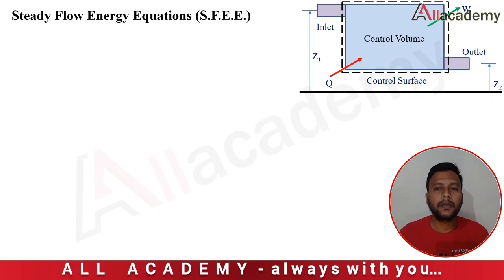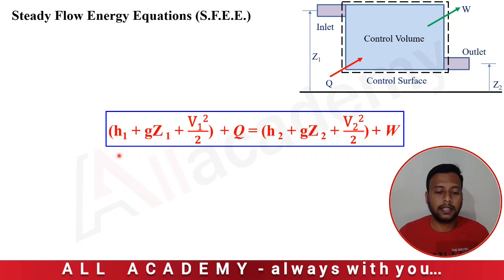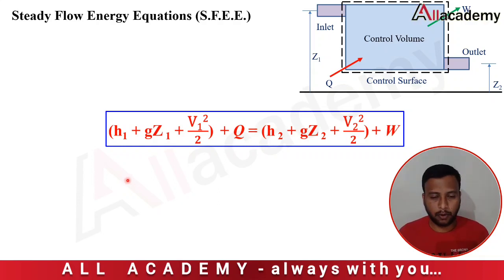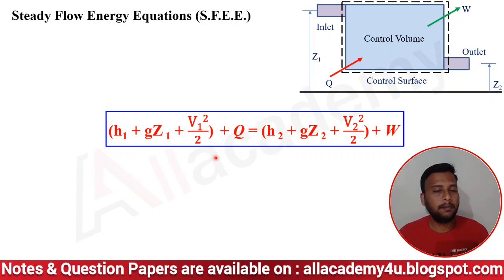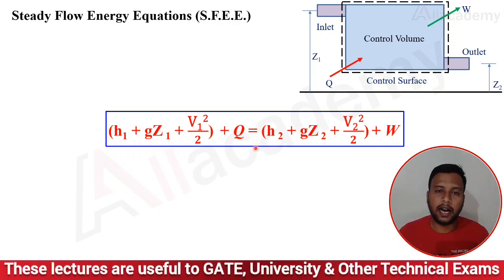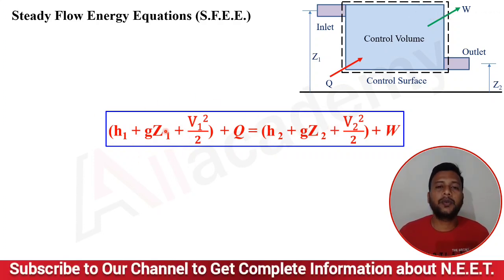In the previous session we already derived the steady flow energy equation: H1 + GZ1 + V1²/2 + Q = H2 + GZ2 + V2²/2 + W. This represents the sum of enthalpy, kinetic energy, potential energy, and heat interaction at the inlet equals the same terms at the outlet plus the work interaction with respect to the control volume.